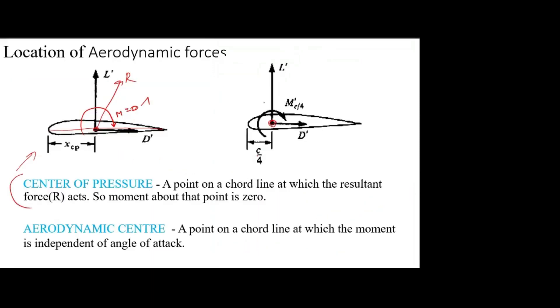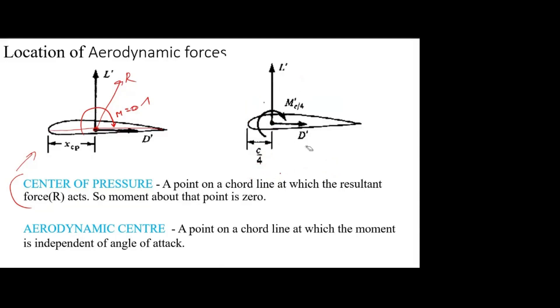If you try to hold the model at other points other than the center of pressure, there will be additional moment. That is why in the second picture they have taken C/4 as a reference point - C/4 means 25 percent of the chord. We always mention in terms of chord: 25 percent of the chord, 50 percent of the chord. So if you place it on the center of pressure, there is no moment. But if you place it on any other point, there will be additional moment.